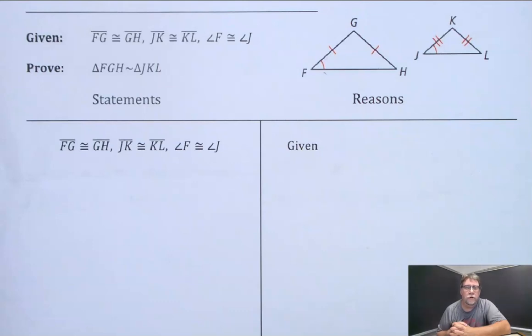Here's an example of a proof we're going to do that will show the two triangles are similar, not congruent, but similar.